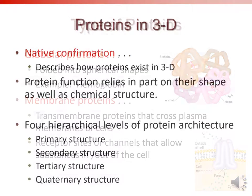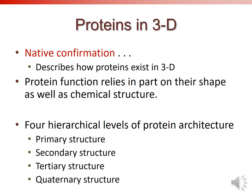The shape of a protein is critically important, and we refer to it as its native conformation — how a protein exists in three dimensions. The function of a protein relies not only on the amino acids that make it up and their sequence, but also on the shape the protein takes. When making a protein, we think about four levels of protein architecture: primary, secondary, tertiary, and quaternary structure.